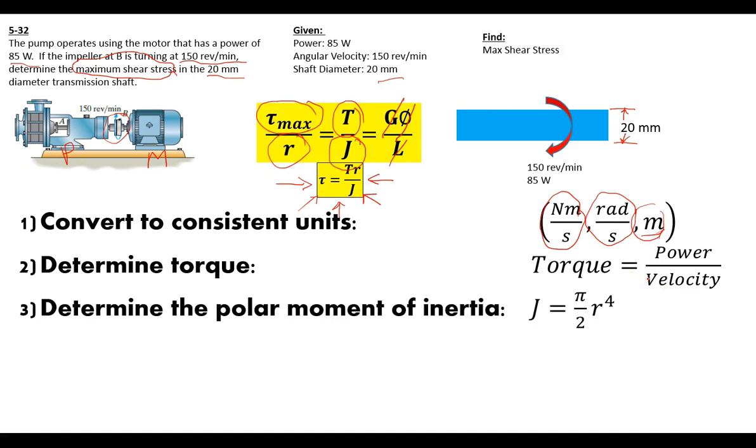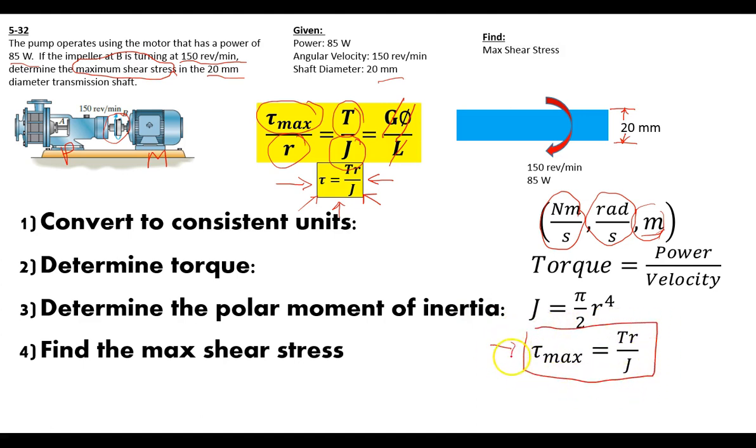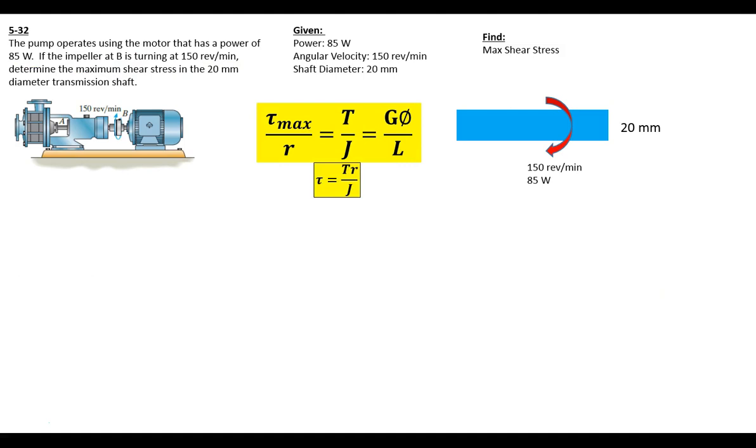Once we've got the torque, we should calculate our polar moment of inertia because we've got a radius. And from there we should be able to utilize our equation to find that maximum shear stress. Let's go to the first couple of steps, getting our consistent units and determining our torque. One revolution is 2π as well as 60 seconds in a minute. Let's look at the power. One watt is one newton meter per second, so it's one to one ratio. So we end up with 85 watts is just 85 newton meters per second. Easy.